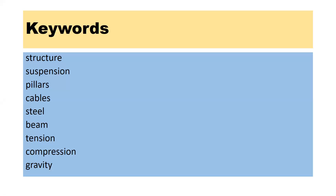Key words — I would like you to pause the video and research the meaning of these key words. You can use an online dictionary to help you, and hopefully you will know what some of these words mean already. The words are: structure, suspension, pillars, cables, steel, beam, tension, compression, and gravity.